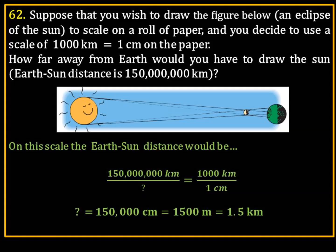Well, you can see that it's getting very large indeed. It's going to be 150 million over question mark equals 1,000 over 1 centimeter. 1 times 150 million divided by 1,000. Again, you're going to move the decimal point over three places: 150,000 centimeters, or 1.5 kilometers.